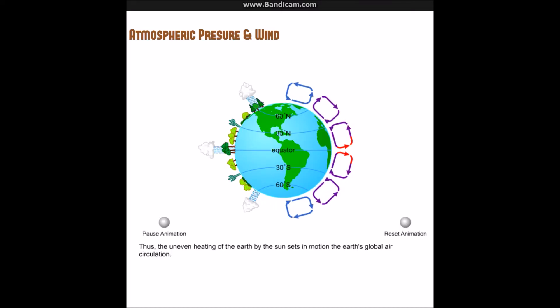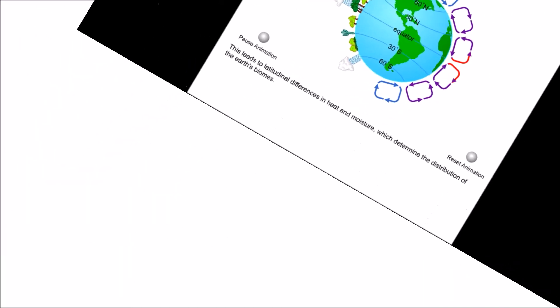Thus the uneven heating of the Earth by the Sun sets in motion the Earth's global air circulation. This leads to latitudinal differences in heat and moisture which determine the distribution of the Earth's biomes.